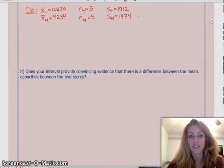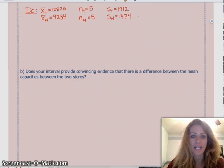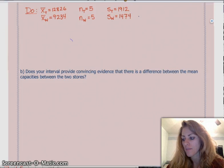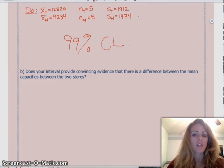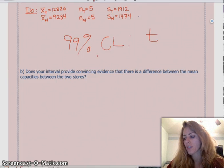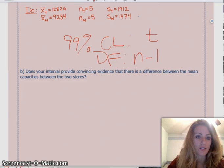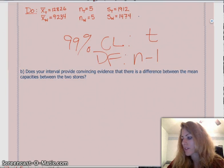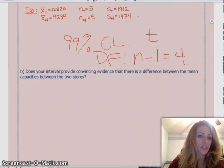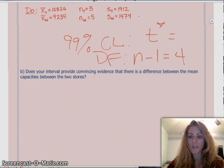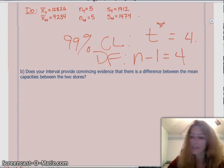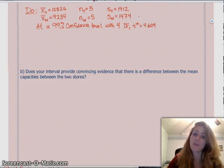So, next we have to find our t* value. And for a 99% confidence level, the t with degrees of freedom n minus 1, and in both cases it's 4, so we don't have to worry about picking a smaller of the two. We find that t* is approximately 4.604.